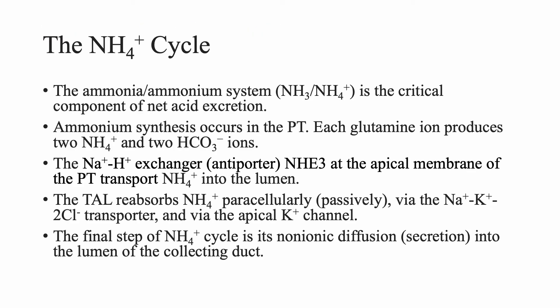Now let's talk about the ammonium cycle. The ammonia-ammonium system — NH3 and NH4+ — is the critical component of net acid excretion. The most important thing is ammonium excretion. Where does ammonium come from? It comes from the proximal tubule. Glutamine, which is an amino acid, will give you 2 ammonium and 2 bicarbonate per molecule.